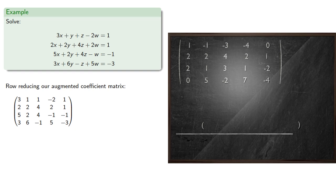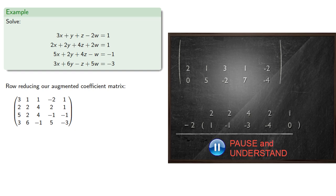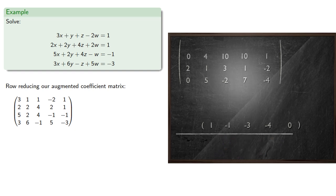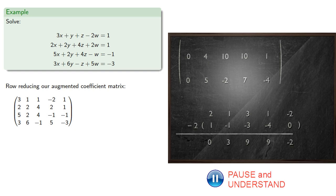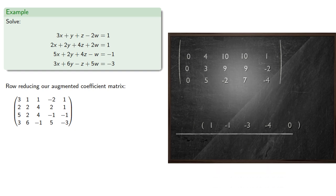And now we'll pivot on the first row. So we'll subtract multiples of it from the other rows. For the second row, we'll subtract twice the first to get a new second row. From the third row, we'll subtract twice the first to get a new third row. And our fourth row already has a zero in that first column, so we'll leave it alone for now.